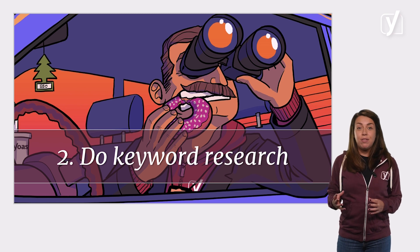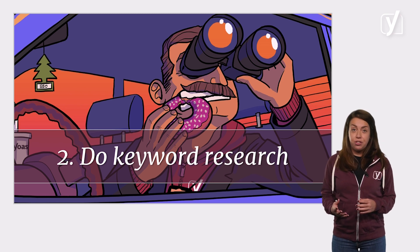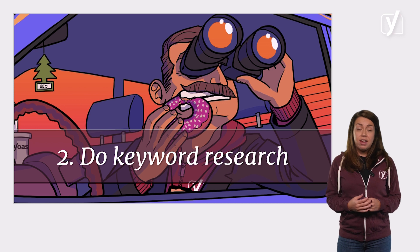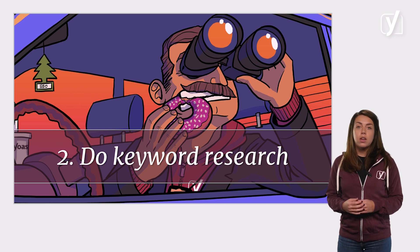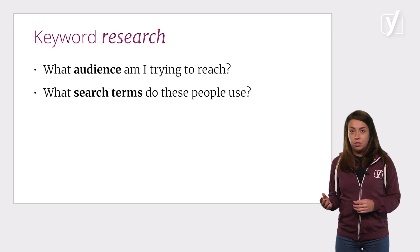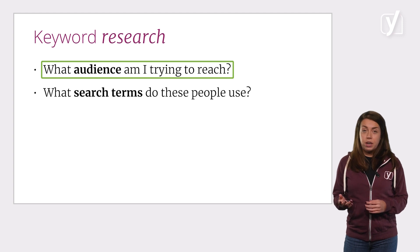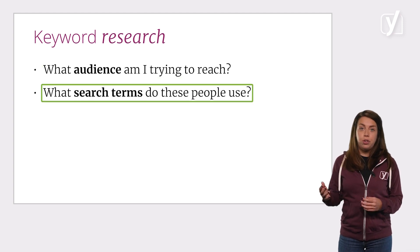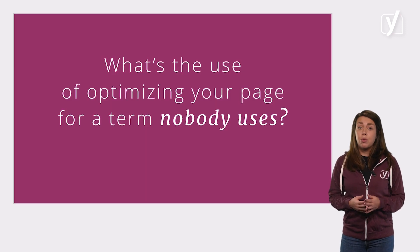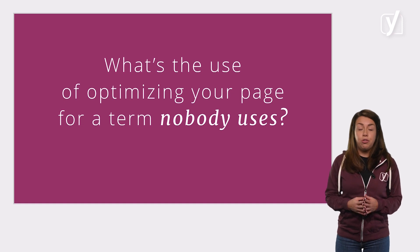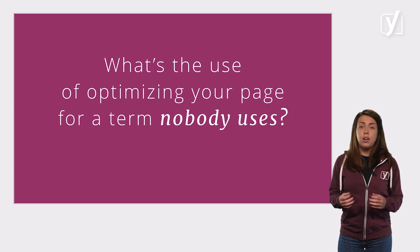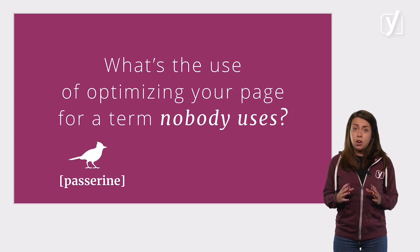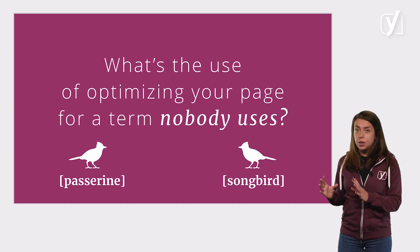The second thing you really have to do for yourself is keyword research. It's a vital element of your SEO strategy. Keyword research is a process where you try to determine the search terms you want to be found for. You need to ask yourself several questions: What audience am I trying to reach? What search terms do these people use? After all, what's the use of optimizing your page for a term nobody uses? In other words, what's the use of ranking number one for 'passerine' when your target audience mainly searches for 'songbird'?